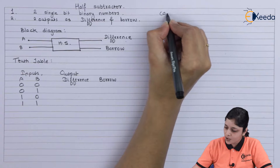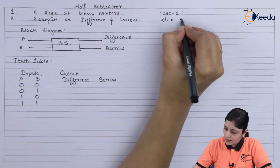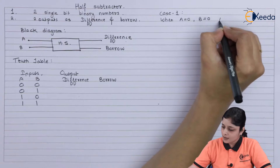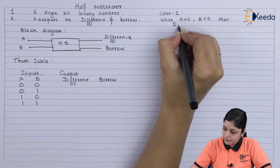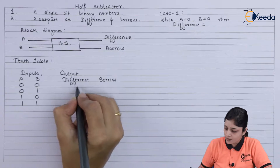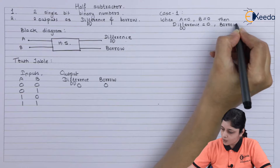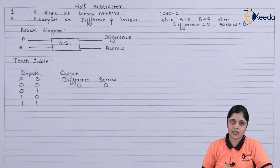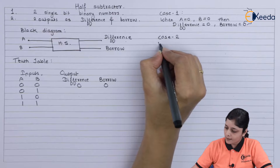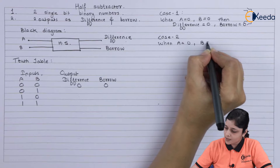Let's start with the explanation. Case 1: when A equals 0 and B equals 0, then difference equals 0 minus 0, which is 0, and borrow is also 0. Now Case 2: when A equals 0 and B equals 1.